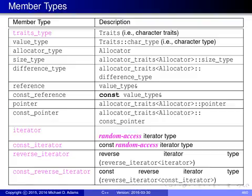The basic_string class template has quite a number of member types, listed on this slide. The more commonly used ones are highlighted in magenta. The traits type is an alias for the template parameter specifying the character traits. Value type is the type used to represent individual characters. Allocator type specifies the allocator for memory allocation. Size type is an unsigned integral type used to represent size measurements — for example, the return type of the size() member function.